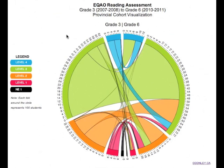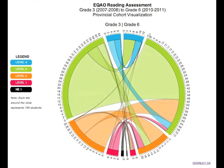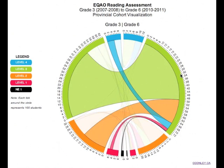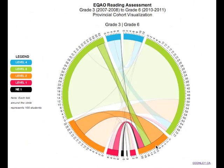Looking at the right side of the circle, the thickest ribbon describes the previous achievement for the largest group of students. Here we see that the largest group of students who achieved at Level 4 on the Grade 6 assessment increased their achievement from Level 3 on the Grade 3 assessment. The largest group of students at Level 3 came from Level 3 on the Grade 3 assessment. At Level 2, came from Level 2.